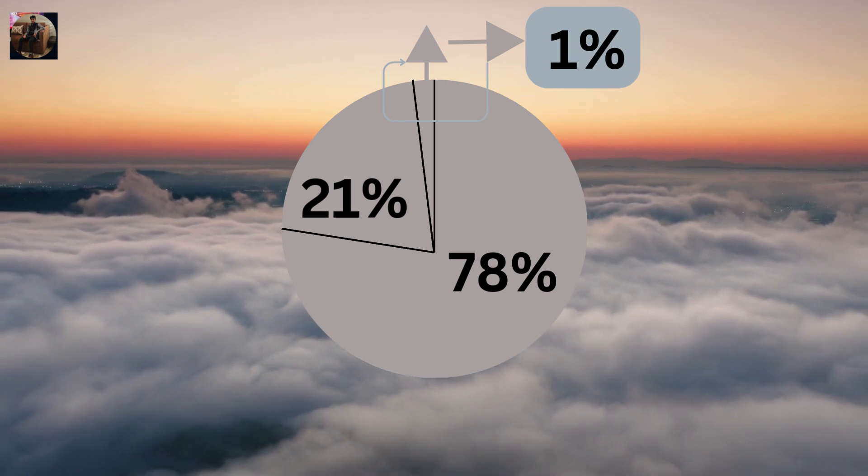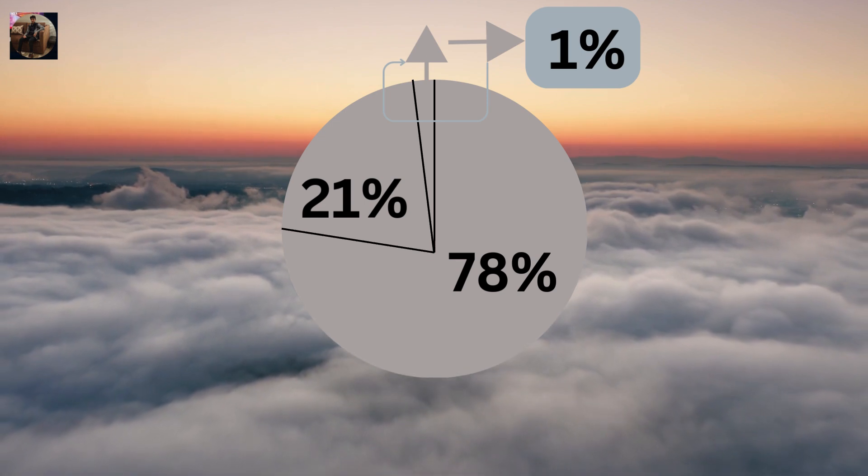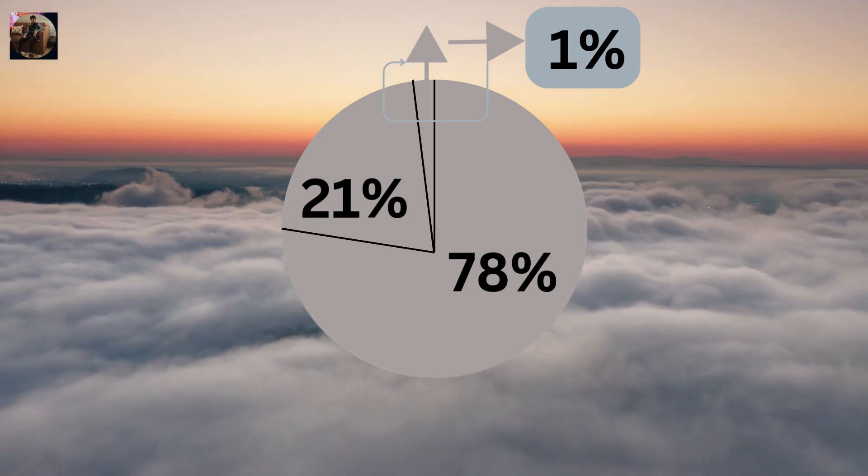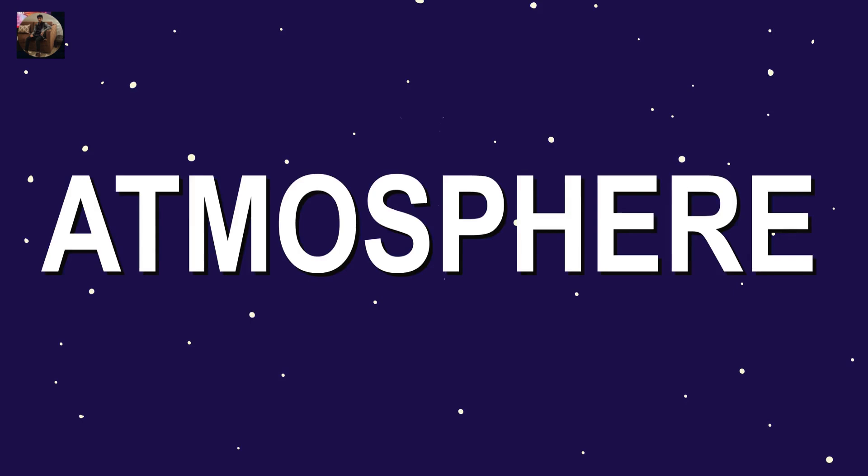The atmosphere is a layer of gases surrounding the Earth, held in place by gravity. It's made up of about 78 percent nitrogen, 21 percent oxygen, and 1 percent other gases like argon, carbon dioxide, and even water vapor.